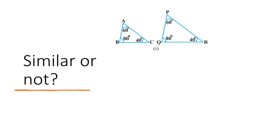Now let us solve the first one. Here we are given two triangles — triangle ABC and triangle PQR — and the measures of three angles are given. Angle A and angle P are equal, which is equal to 60 degrees, and angle B and angle Q are equal, which is equal to 80 degrees. Angle C and angle R are equal, which is equal to 40 degrees.